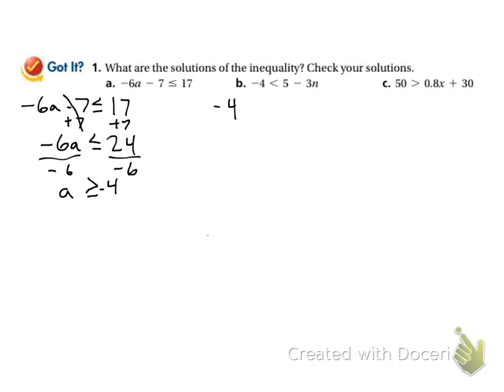Negative 4 is less than 5 minus 3n. I want to get n alone. I need to get rid of the 5 and I need to get rid of that negative 3. The first thing I'm going to do is subtract that 5 from both sides. I get negative 9 is less than negative 3n.